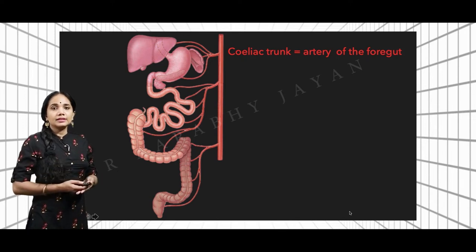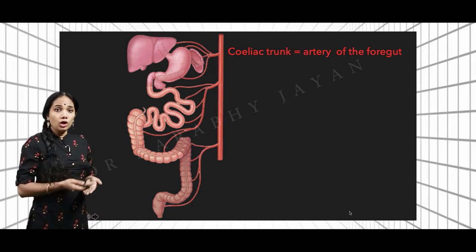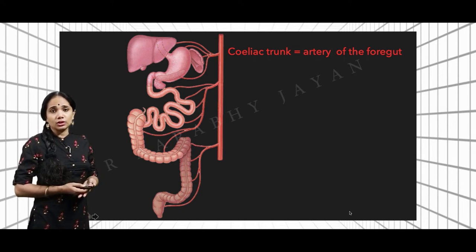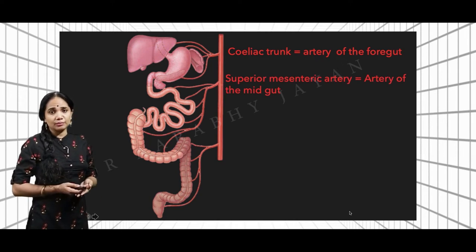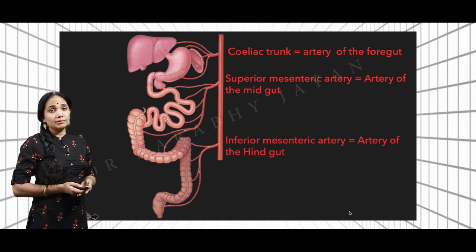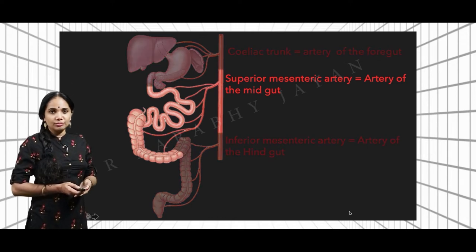The midgut starts from the distal part of the second part of the duodenum all the way down to the transverse colon, ending by supplying the right two-thirds of the transverse colon. The entire small intestine is part of the midgut, and the superior mesenteric artery is the artery of the midgut. The remaining part of the gut tube becomes the hindgut, and the inferior mesenteric artery is the artery of the hindgut.